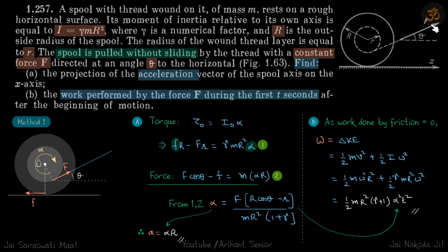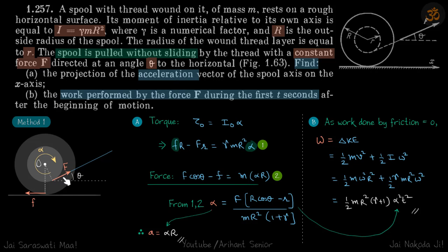We have a spool which is being pulled by force F, and this force always makes angle theta with constant value. We need to find the acceleration of the spool and work performed by force F during the first T seconds. This force pulls the center of mass towards right and also rotates the spool anti-clockwise, so both motions try to slip the contact point towards right — therefore friction acts towards left. We then proceed with torque and force calculations.